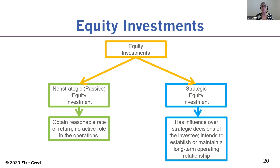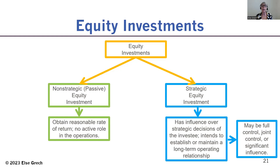A strategic equity investment is when the investor corporation has enough share ownership that they can actually influence the strategic decisions of the investee — meaning they have influence over the operating, investing, and financing decisions. The investor will purchase enough shares because they want to establish or maintain a long-term operating relationship with the investee corporation. Depending on the level of ownership, the investor corporation may have either full control, joint control, or significant influence. I'm going to describe all those things in later videos.